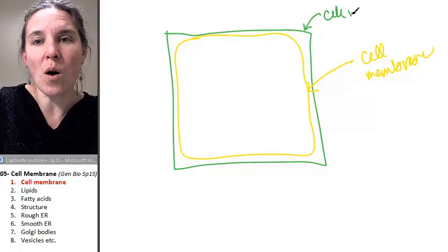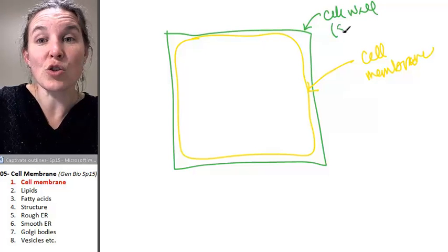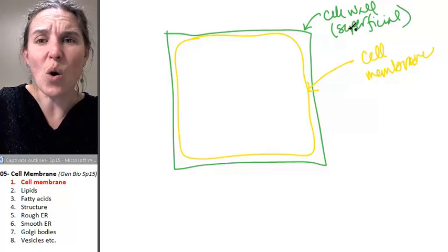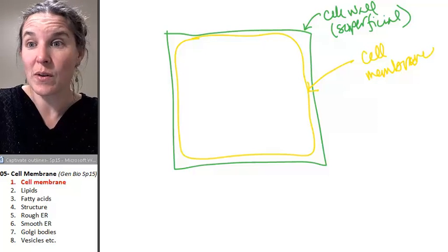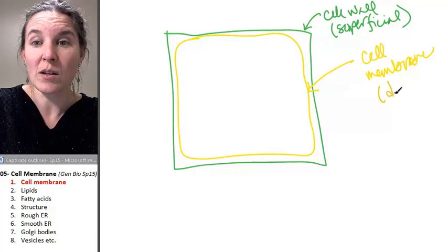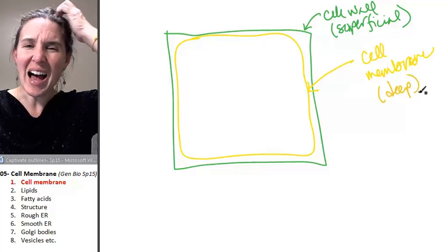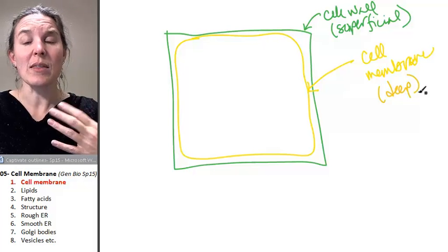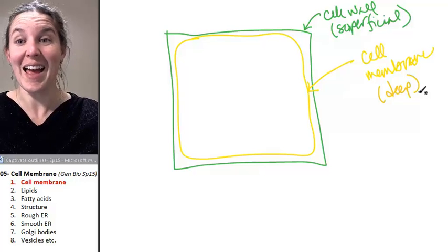So this is my cell wall, which is superficial. And of course, that's only compared to the cell membrane. The cell membrane is deep. I just want you to be sure to understand that every cell has a cell membrane.